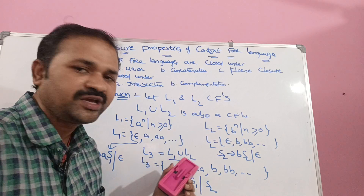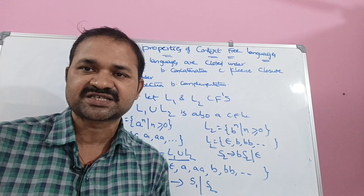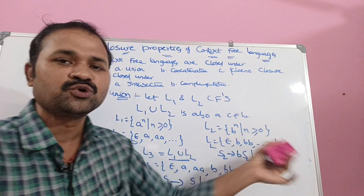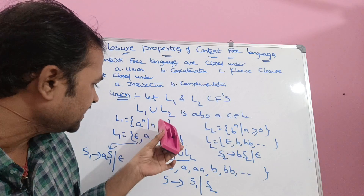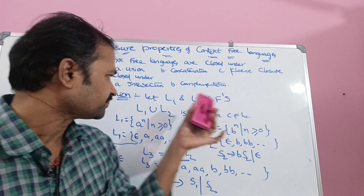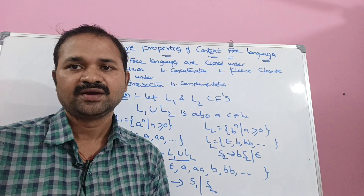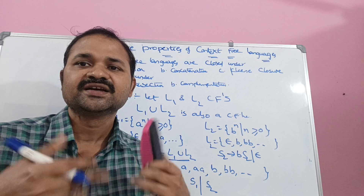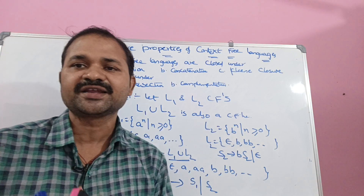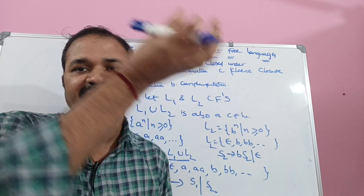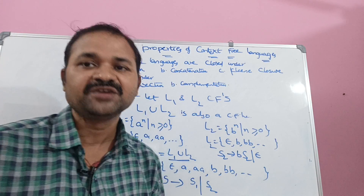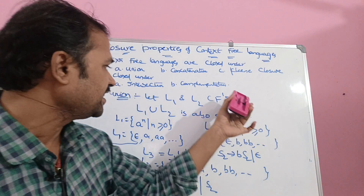So we can say that L1 union L2 is also a context-free language. L1 union L2 may contain either L1 strings or L2 strings — union means OR operation. If L1 generates a string, that string is present in L3. Similarly, if L2 generates a string, that string is also present in L3. Therefore, context-free language is closed under union.